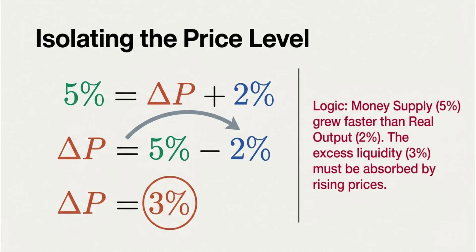The moment of truth. We have our formula. We have all our clues. It is time for the big reveal. Let's put everything together and finally figure out what that one missing piece of the puzzle is. So let's just walk through it. Our equation is delta M plus delta V equals delta P plus delta Y. Let's plug in what we know. That's 5% plus 0% equals our mystery variable, delta P, plus 2%. That simplifies down to just 5% equals delta P plus 2%. Do a little quick algebra,